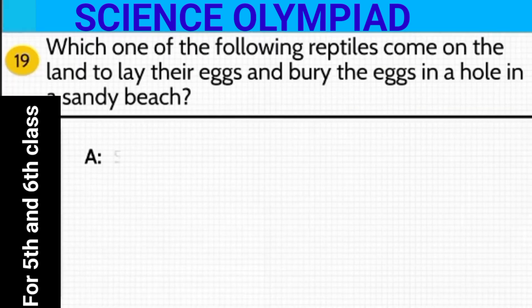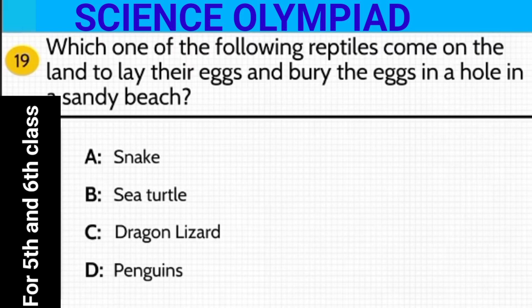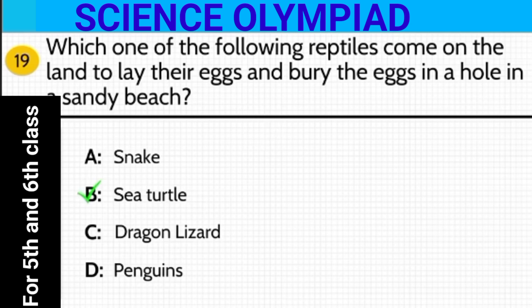Which one of the following reptiles comes on land to lay their eggs and buries them in a hole in a sandy beach? The answer is sea turtle — it comes on land to lay its eggs and then buries them in a hole on a beach.